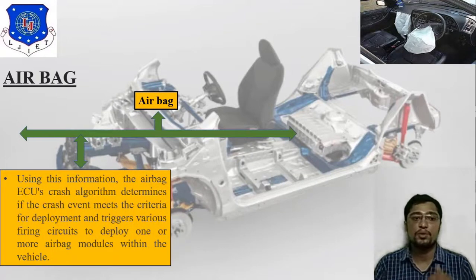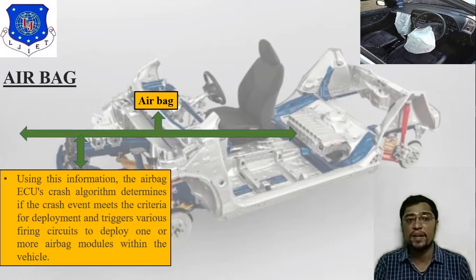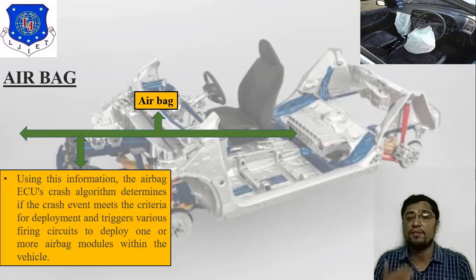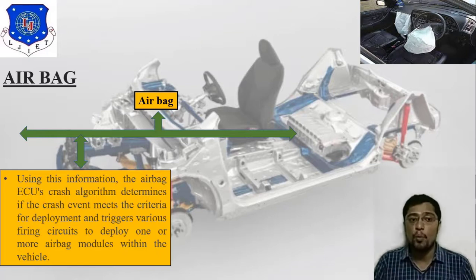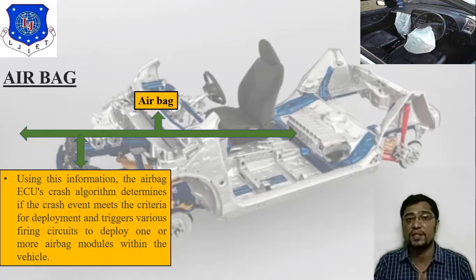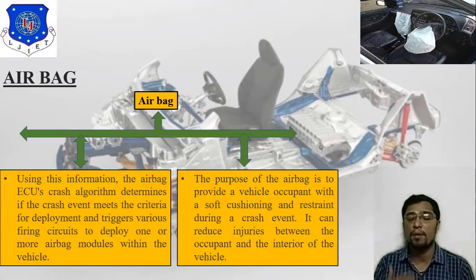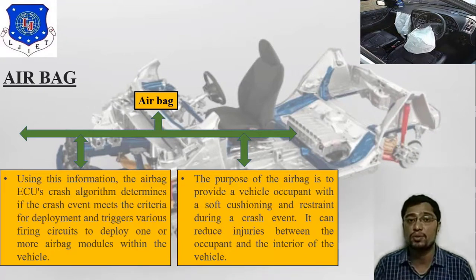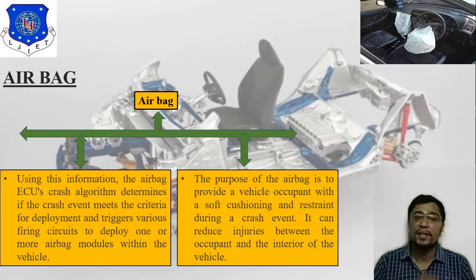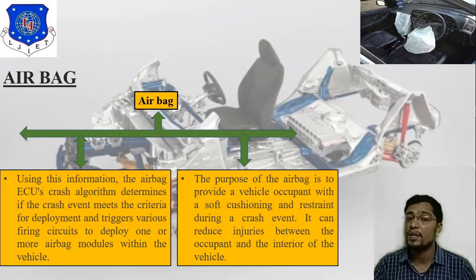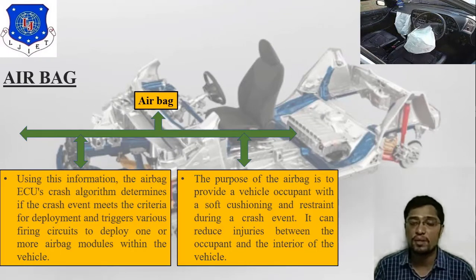Using this information, the airbag ECU's crash algorithm determines if the crash event meets the criteria for deployment and triggers various firing circuits to deploy one or more airbag modules within the vehicle. The purpose of the airbag is to provide a vehicle occupant with a soft cushion and restraint during a crash event, reducing injury between the occupant and the interior of the vehicle.